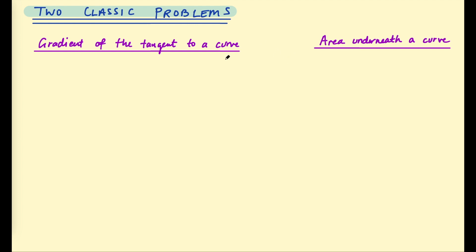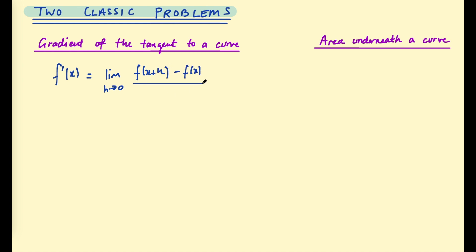Let's briefly review what we've discovered so far. We've looked at two classic problems: how to find the gradient of the tangent to a curve, and how to find the area underneath the curve. For the tangent, we used differentiation from first principles, finding that f'(x) was equal to the limit as h approaches 0 of f(x+h) minus f(x), all over h. We also found some shortcuts, which is what we call differentiation.